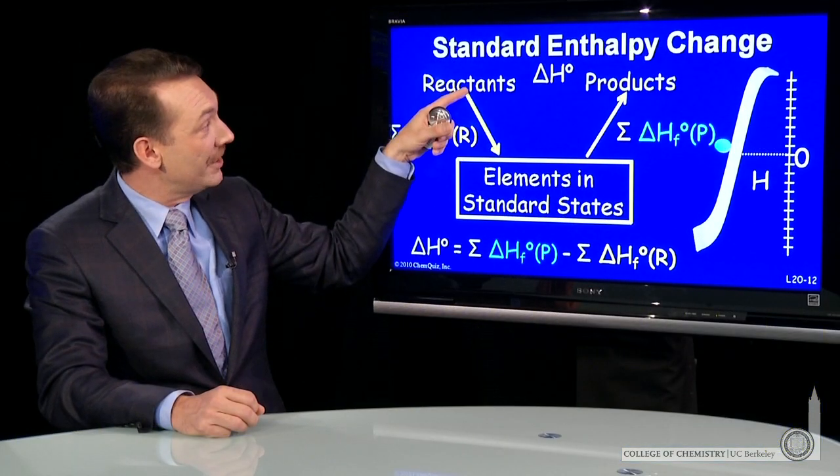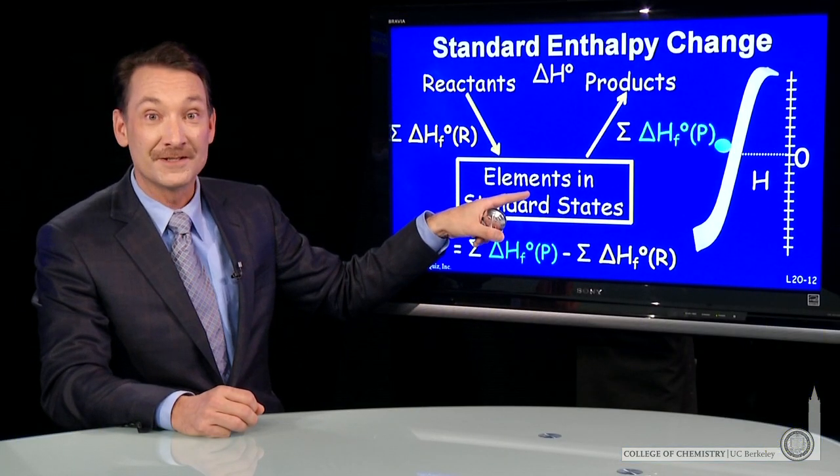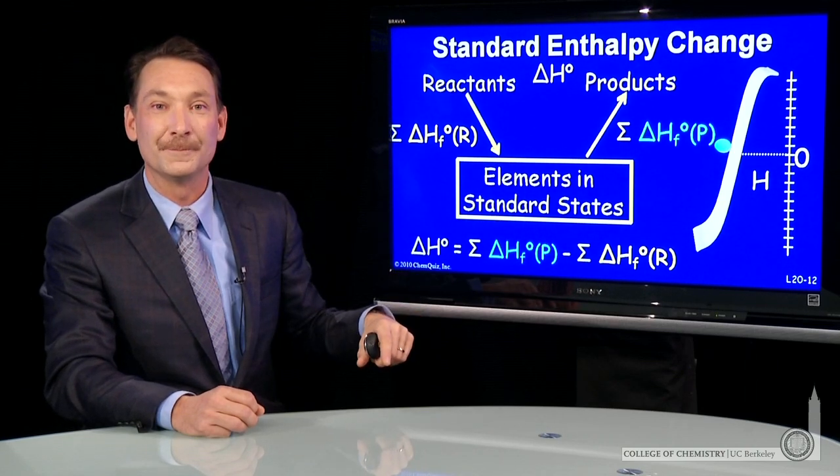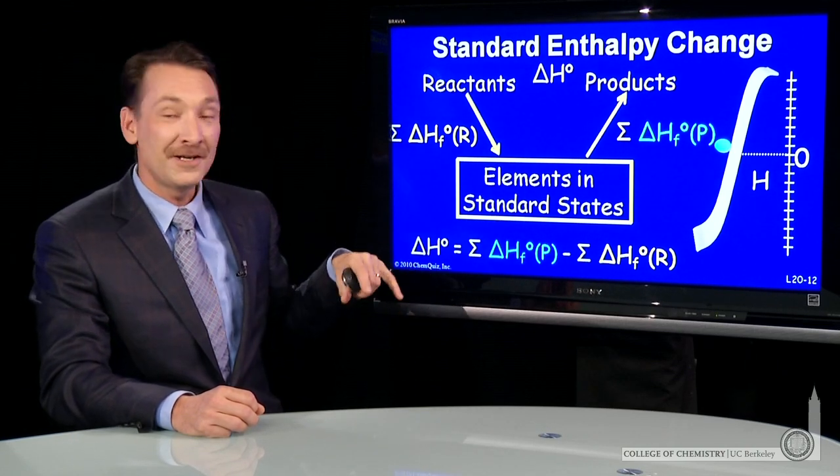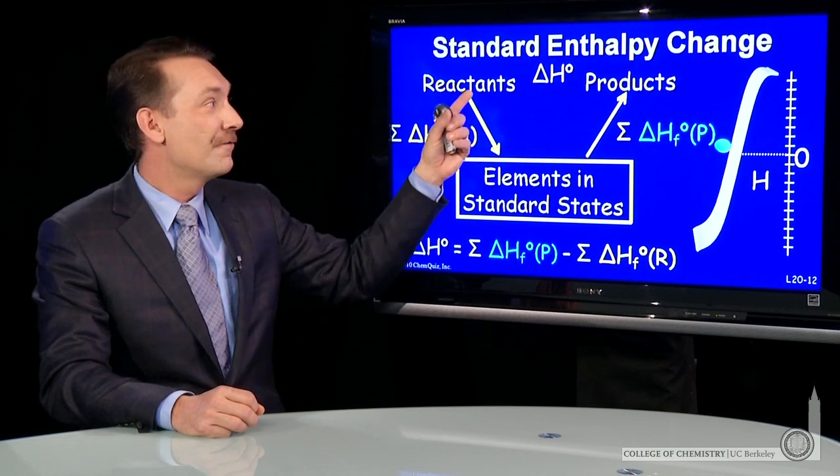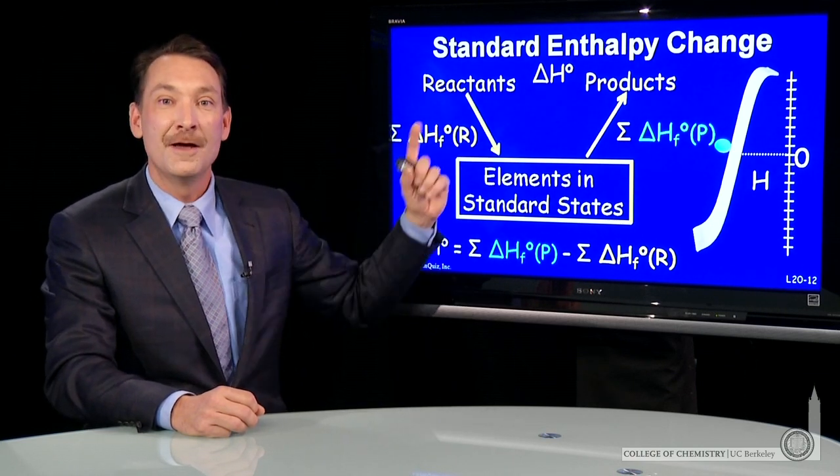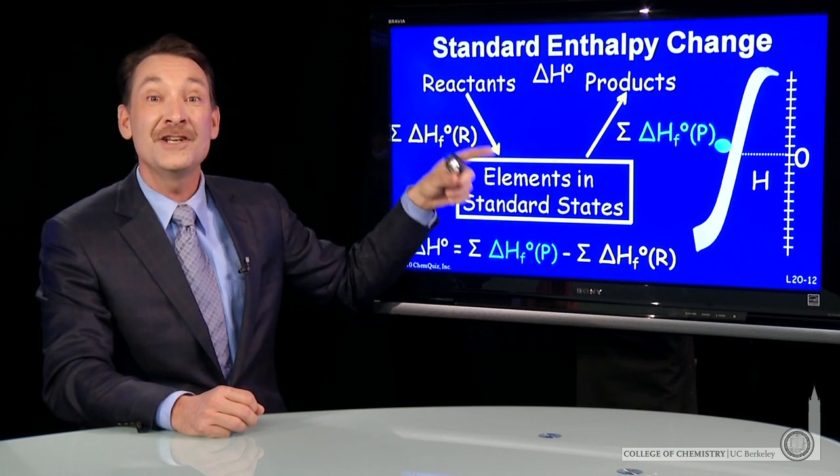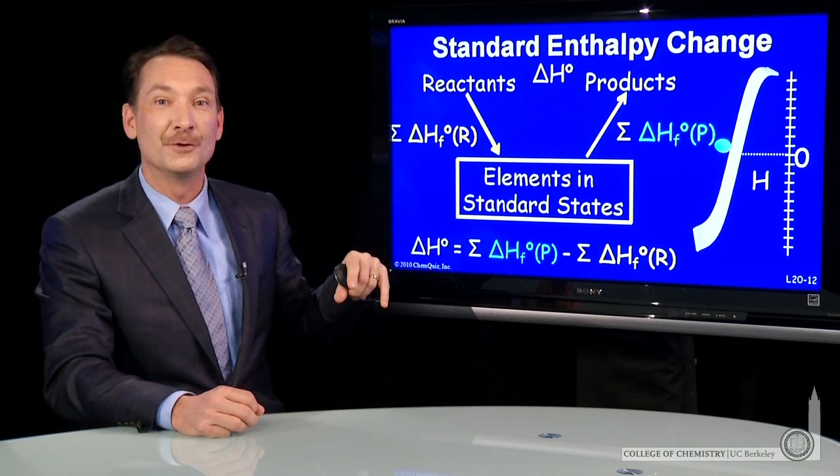The negative sign is because I've gone from reactants to elements in their standard state—I've taken the reverse reaction of heats of formation. So I can calculate the enthalpy change for an arbitrary chemical reaction between two compounds if I know the enthalpies of formation for those compounds—a very powerful tool.